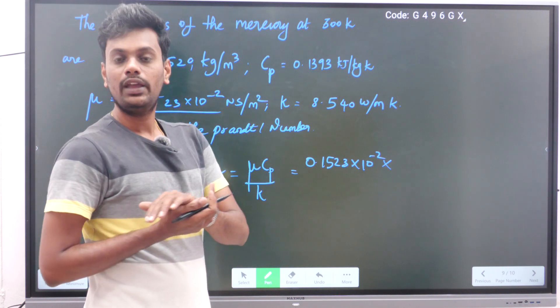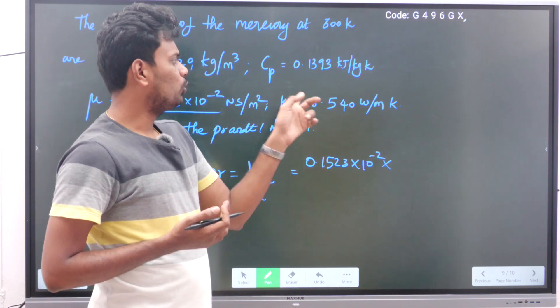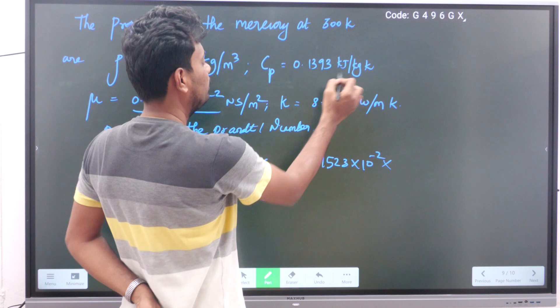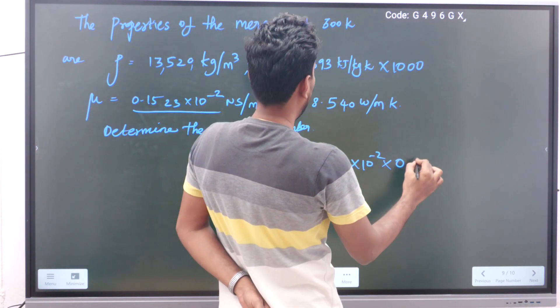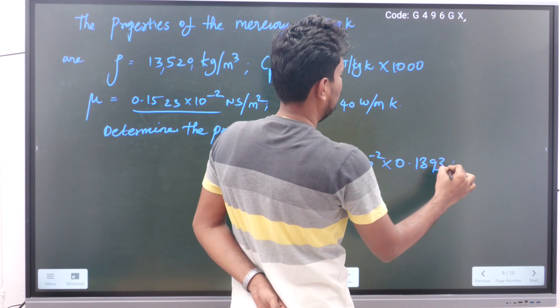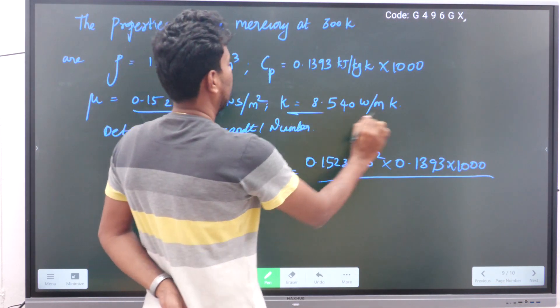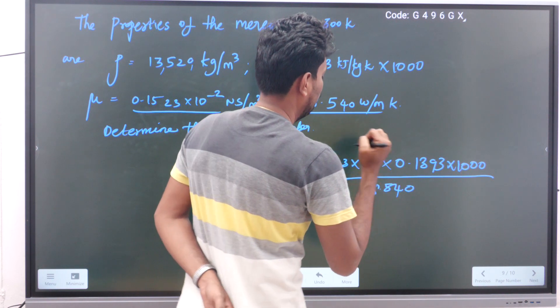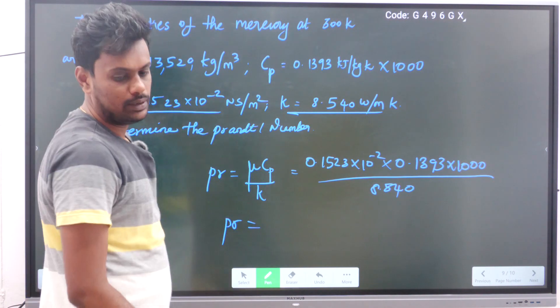But if you take in kilojoule then the unit will not get cancelled. So you have to convert that to joules per kilogram Kelvin. I am just multiplying this by 1000. So here also I am putting 0.1393 × 1000 divided by k, k is 8.540.